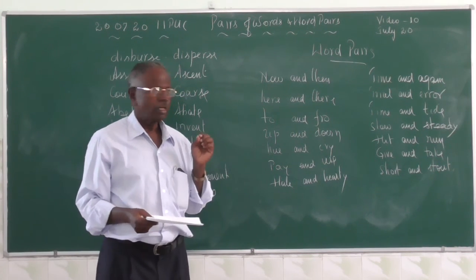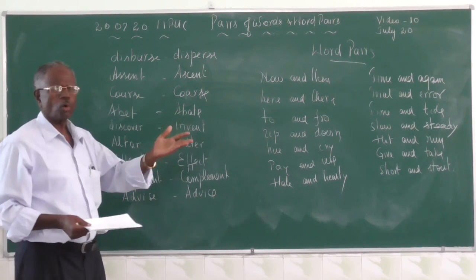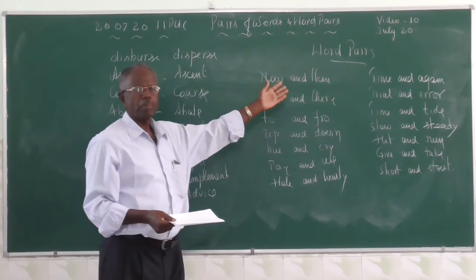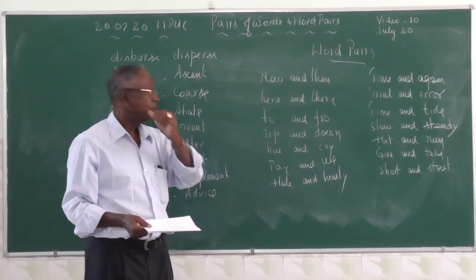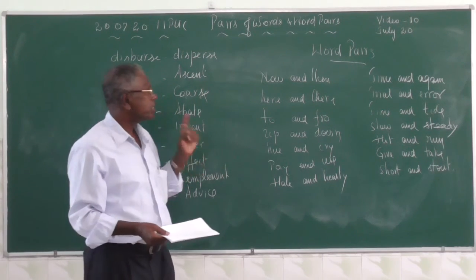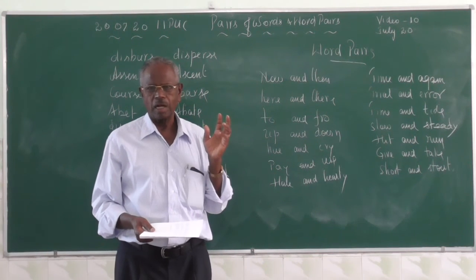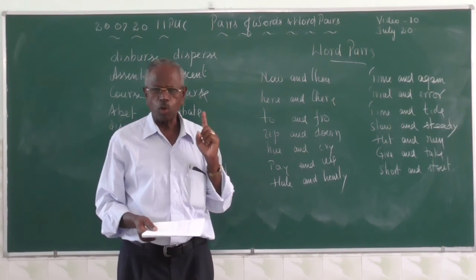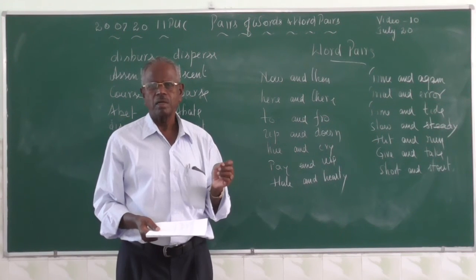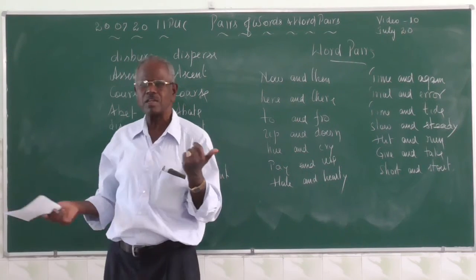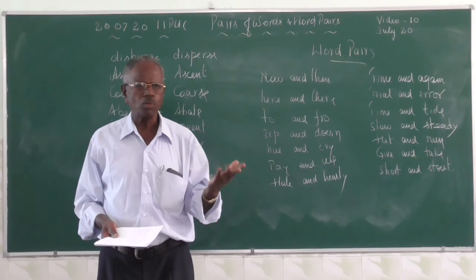So in your homework, all of you please find 10 pairs of words — similar words with different meanings — and 10 word pairs. There are many word pairs: up and down, here and there, to and fro, in and out. Please write down at least 10 of each so that it increases your vocabulary. Don't neglect it.